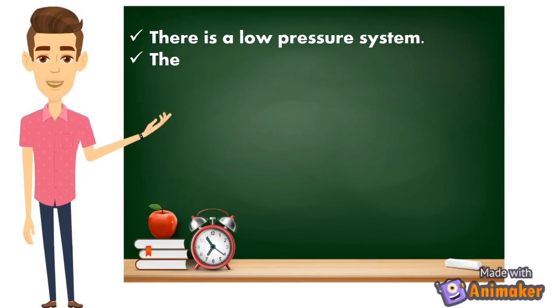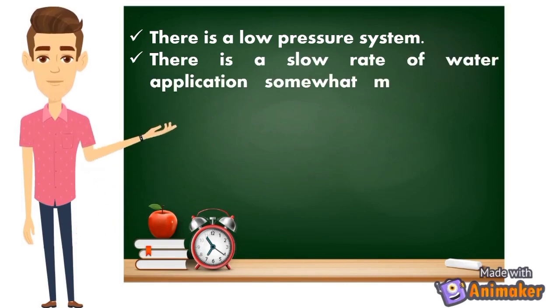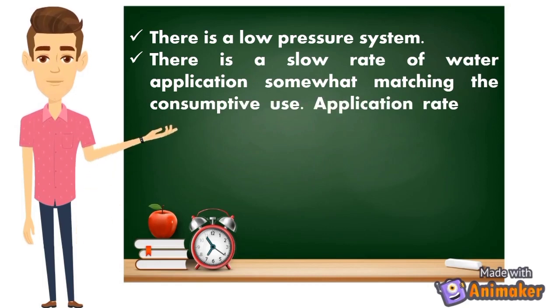There is a low pressure system with a slow rate of water application, somewhat matching the consumptive use. Application rate can be as low as 1 to 12 liters per hour. Only a small amount of water is produced because the pressure in this system is lower compared to other types of irrigation systems.